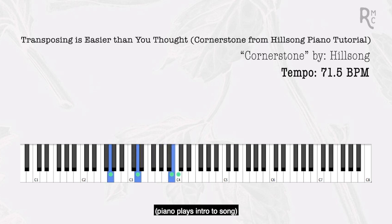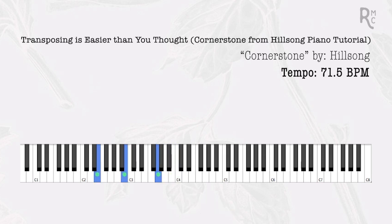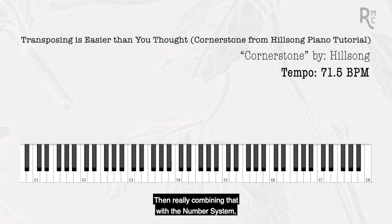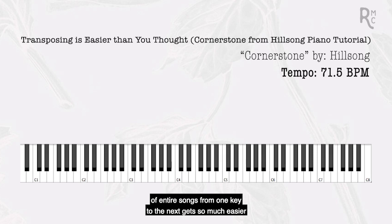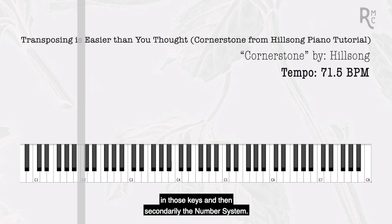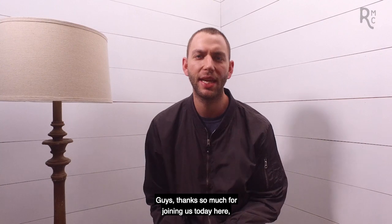That's how easy transposition can be. It all boils down to understanding the different keys of music — when you can play in those fluently and combine that with the number system, moving entire songs from one key to the next gets so much easier. We literally just moved the intro of Cornerstone from the key of C to the key of G on the fly, simply by understanding the keys and the notes involved.